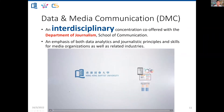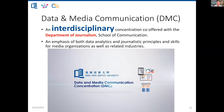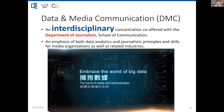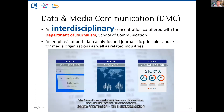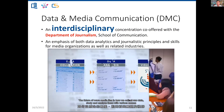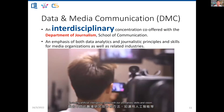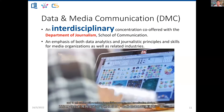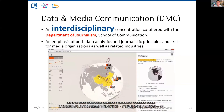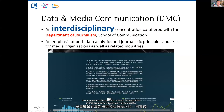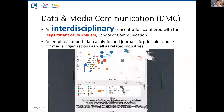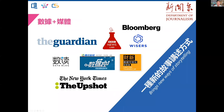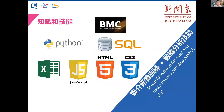The first concentration is DMC, an interdisciplinary concentration co-offered by the Department of Computer Science and the Department of Journalism. The future of news media lies in how we collect raw data, analyze it, and visualize it in various ways before reporting findings. This requires both journalistic and computer science skills. DMC provides training in both journalism and data analytics, and our journalism colleagues have strong connections with media. New skill sets — such as writing programming scripts and using software tools — are now essential in journalism.